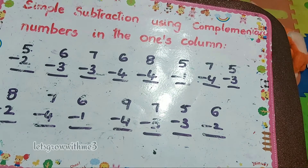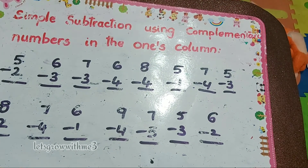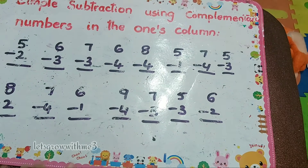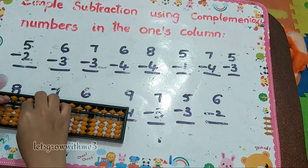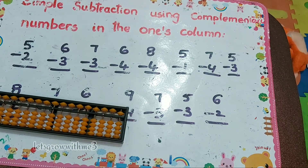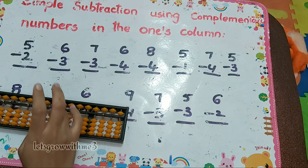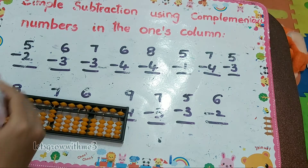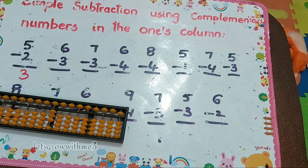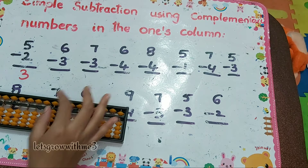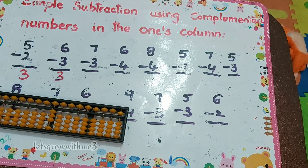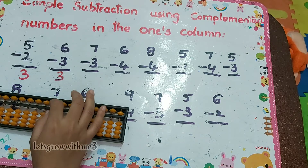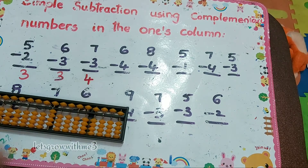So next problem: simple subtraction using complementary numbers in the ones column. Now we will use both the bits and we will use complementary numbers. 5 minus 2 — how to do minus 2? Minus 5 plus 3. Next one: 6 minus 3 — we can't do direct, so we must use the complementary concept. Minus 5 plus 2, so the answer is 4.